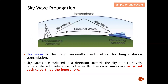The sky wave is the most frequently used method for long-distance transmission. From this diagram you can see that a base station can reach a ship that is many kilometers away from the transmitting antenna. The electromagnetic wave shoots towards the sky, and with the ionosphere it is reflected back, finally reaching down to the receiving antenna.